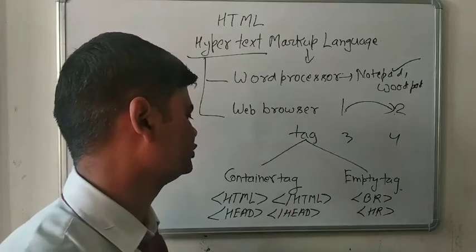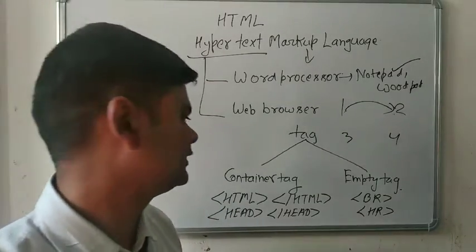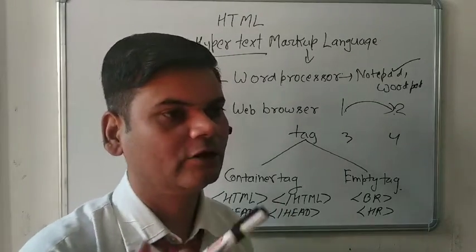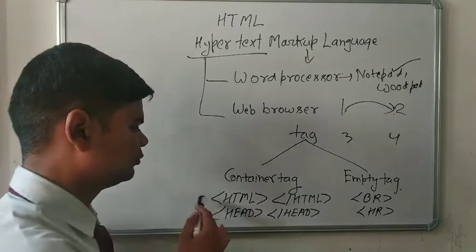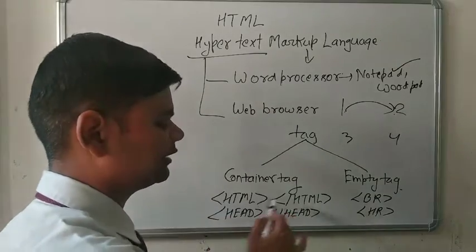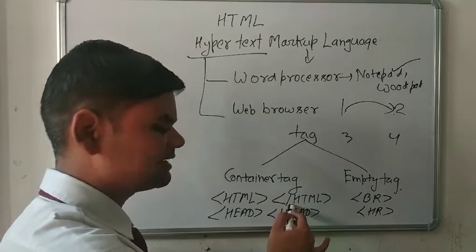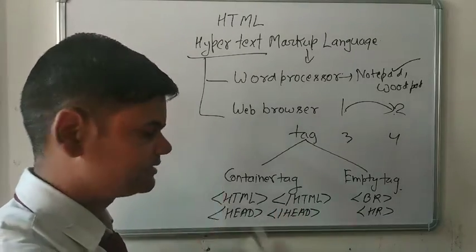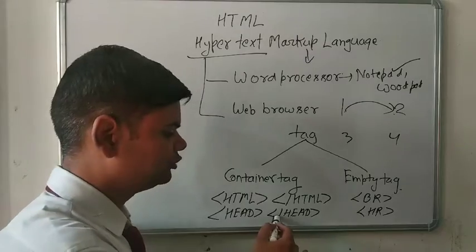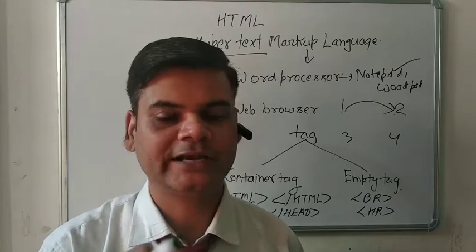A tag has two parts: the first part is known as the container tag, and the second is the empty tag. A container tag has both a starting and an ending tag. For example, this is the starting tag of HTML and that is the ending tag of HTML. We use a backslash in the ending tag — backslash means that is the ending tag.